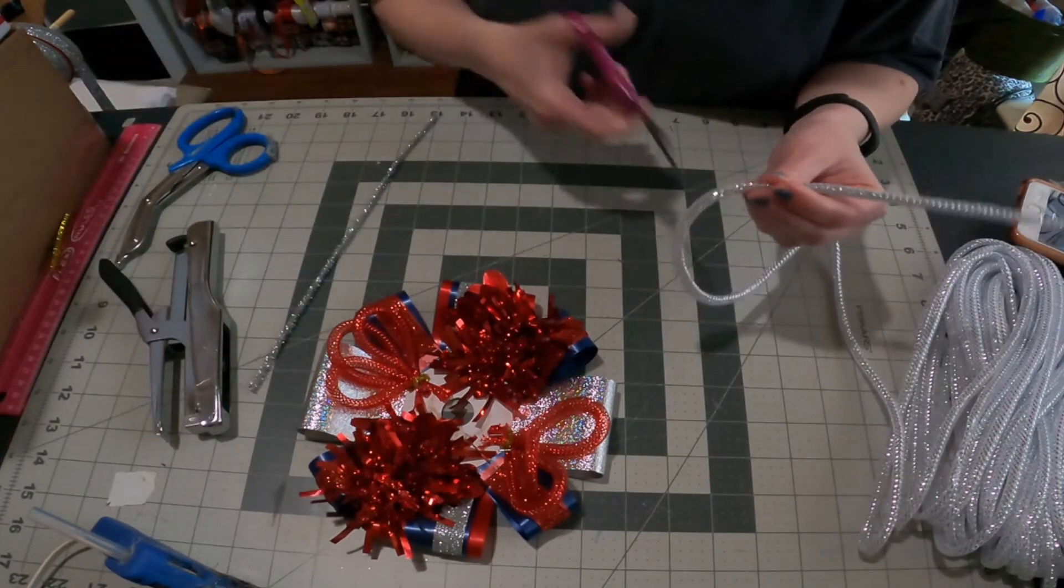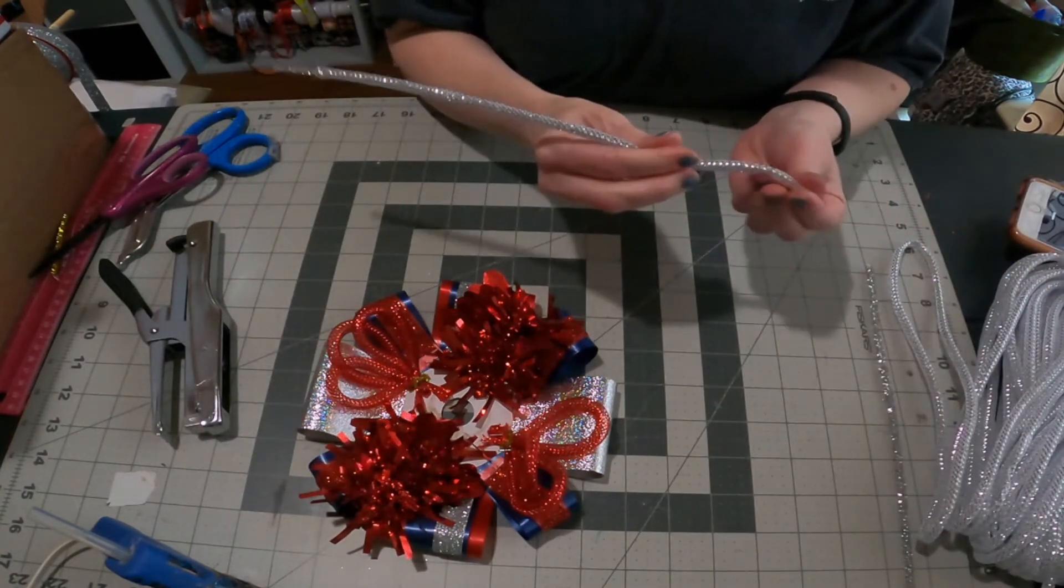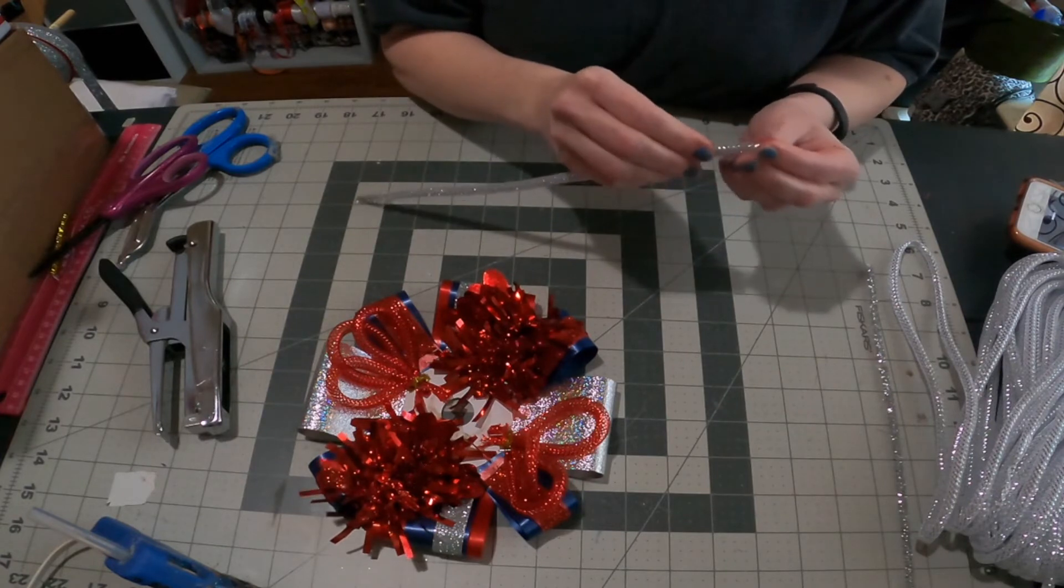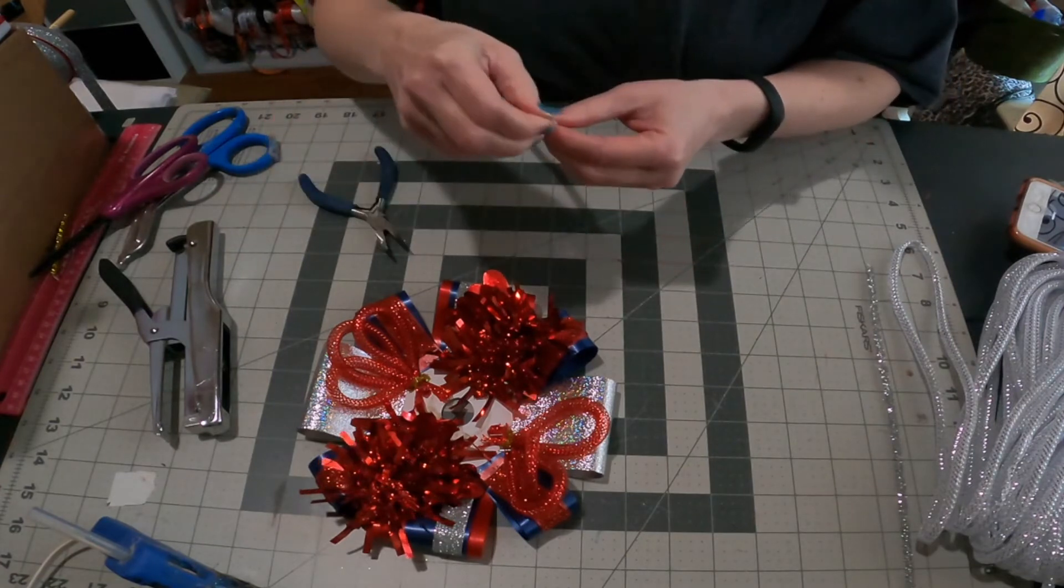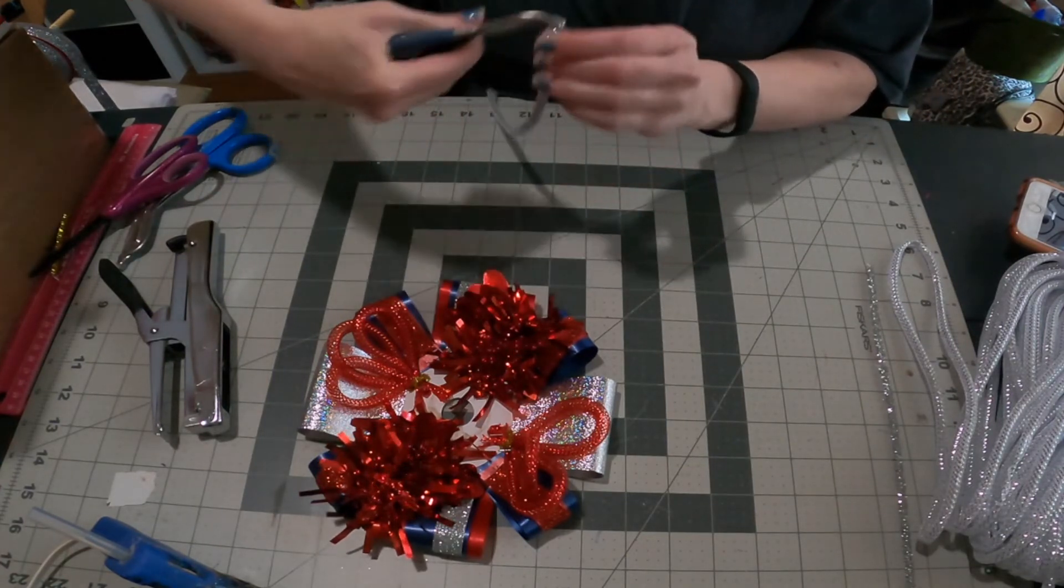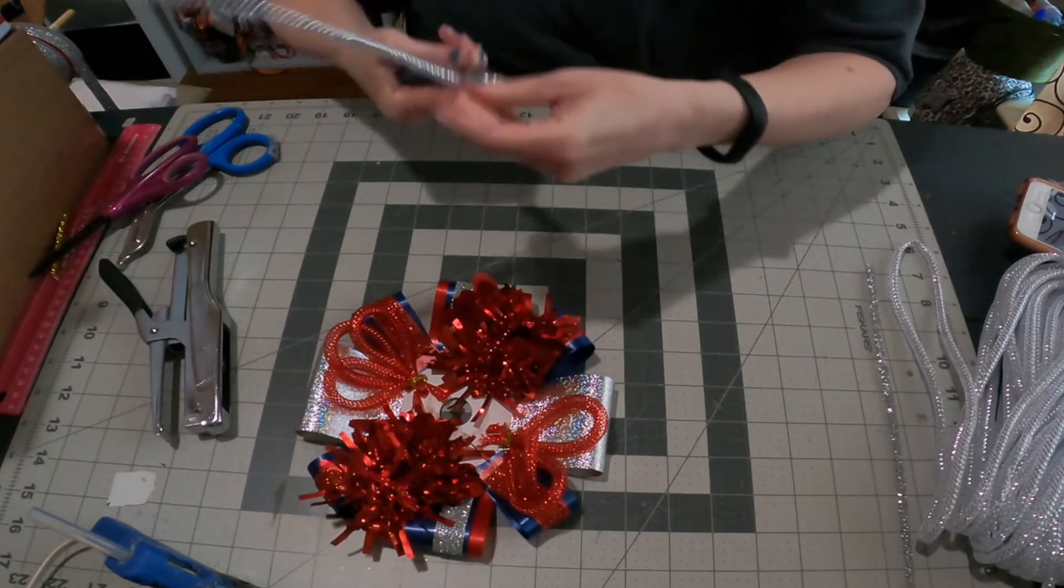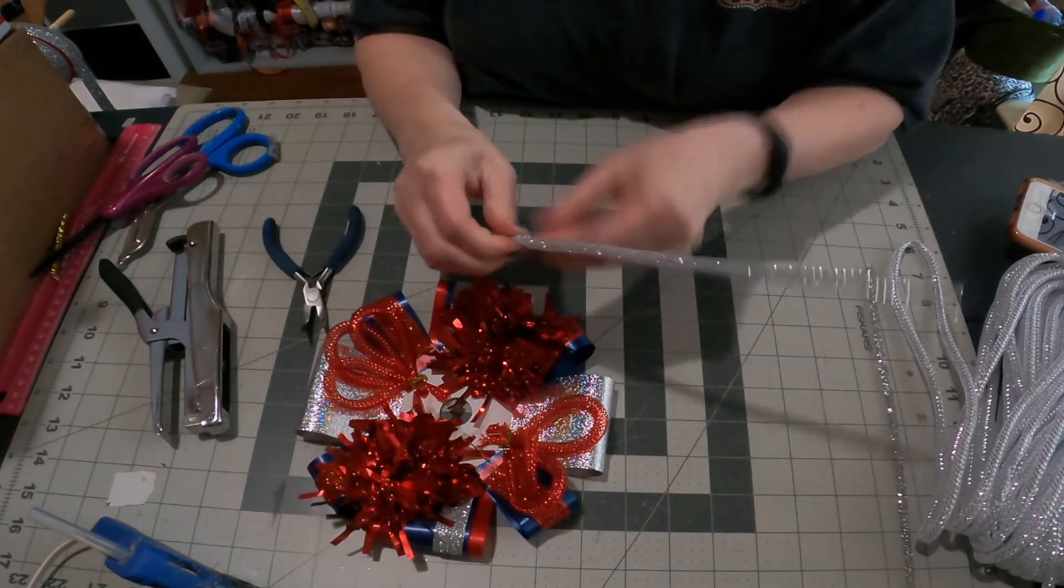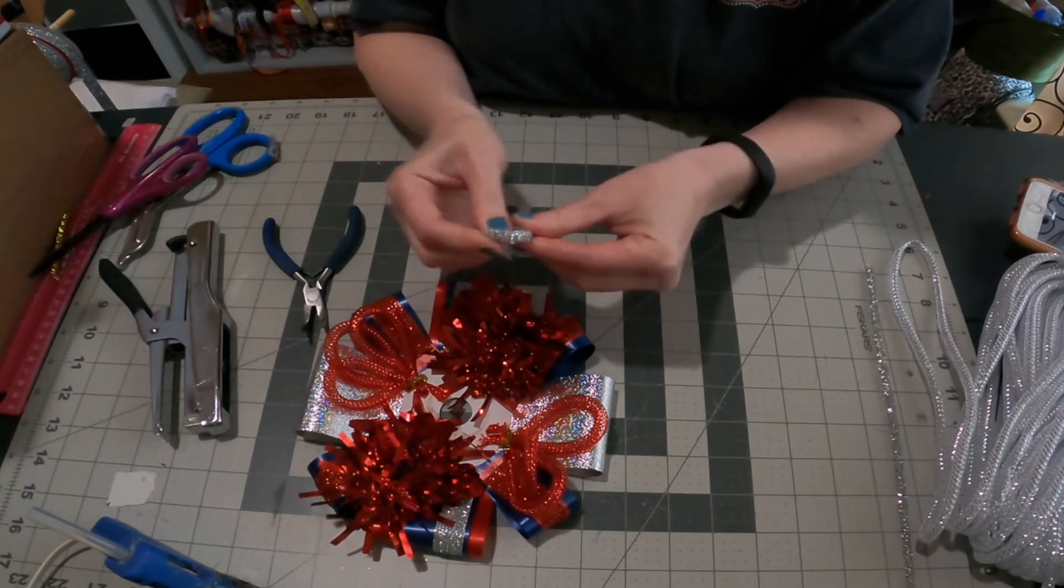Now I'm running a chenille stem inside the tubing and leaving at least an inch there on one end. An inch, inch and a half. And then I'm going to start at that end and start twirling it down, just making a spiral out of it. And I like to make sure the tubing is going over the chenille stem where I'm twirling it, where you begin.